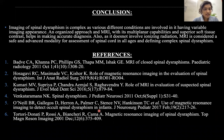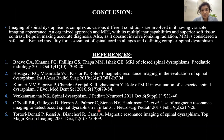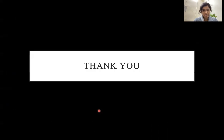To conclude, imaging of spinal dysraphism is complex, as various different conditions are involved having variable imaging appearances. An organized approach and MRI with its multiplanar capabilities and better soft tissue contrast helps in making an accurate diagnosis. Since it doesn't involve any ionizing radiation, MRI is considered a safe and advanced modality for assessment of the spinal cord in all ages and for defining complex spinal dysraphism.